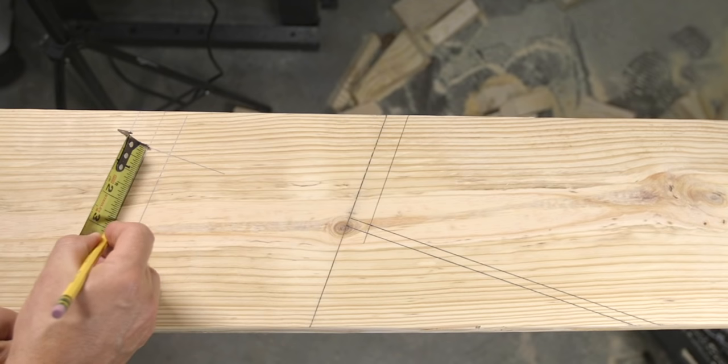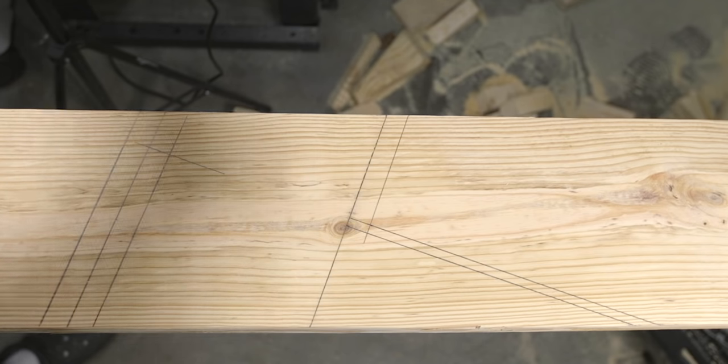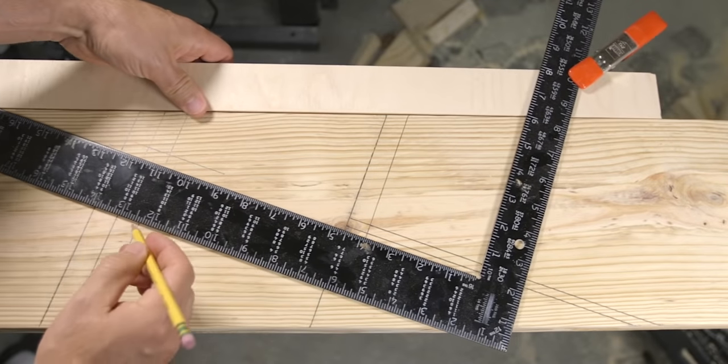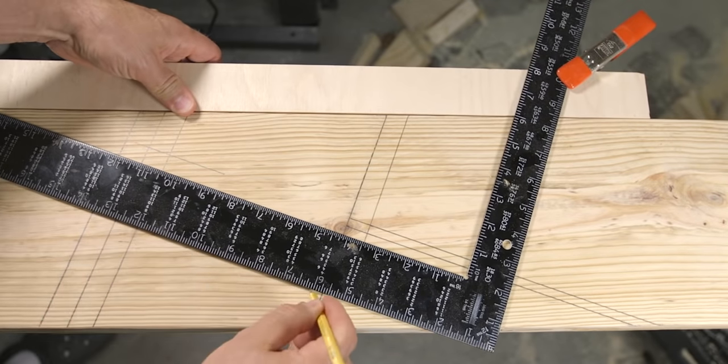Transfer that measurement down from our extended seat cut line, make a mark, and draw the soffit cut line. Again, there's a lot of lines here, so let me darken them so you can see more clearly.